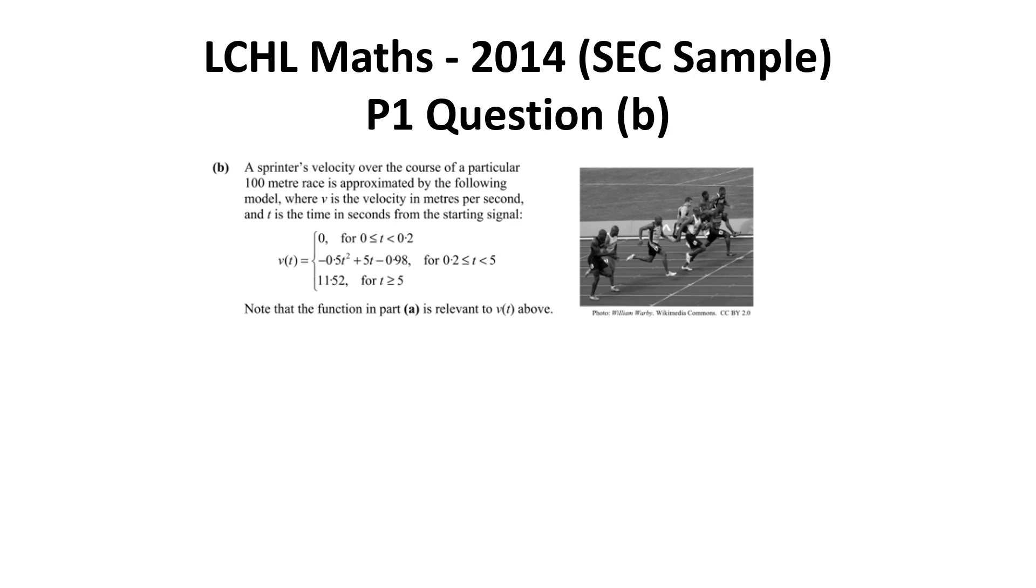Here's a lovely question worth taking a look at. It is Leaving Cert Maths from the 2024 SEC sample, Paper 1, question 9b. What I like about this is it presents us with a model that cannot really be just one function - it's made up of a combination of functions. We have the velocity broken into three sections: it's zero when t is between 0 and 0.2, a negative quadratic between 0.2 and 5, and then just 11.52 for t greater than or equal to 5.